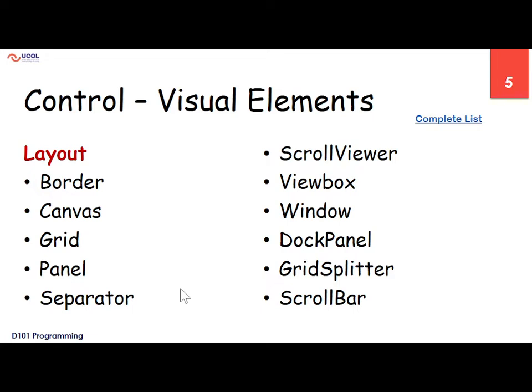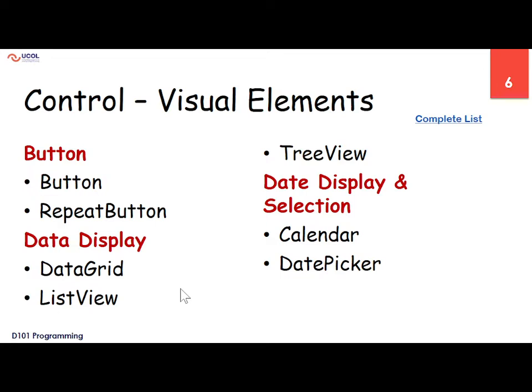We have a large number of GUI components. For layout we have: border, canvas, grid, panel, separator, scroll view, view box, window, dock panel, and so on. All of these help us build a layout — a layout is the window in which components will be arranged.